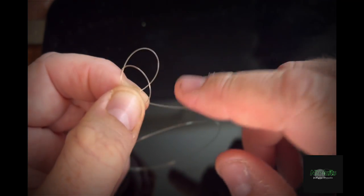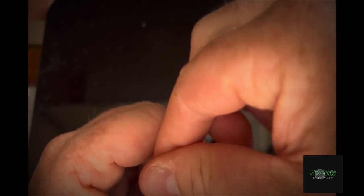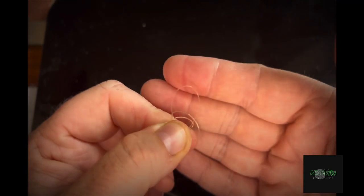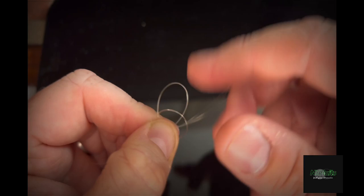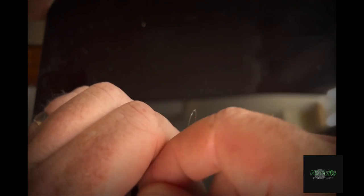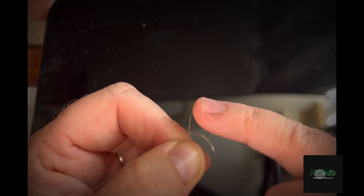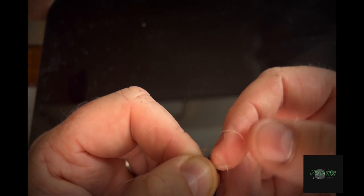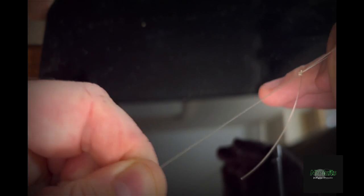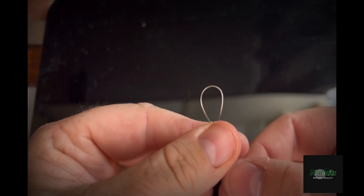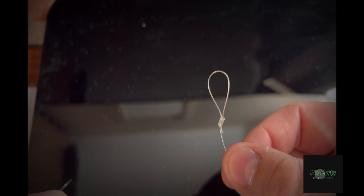Then just take this bit of line here and go in between the two. So at that point you've got the line going between the two and you're left like this. All you're going to do is take this part and put it through the center.